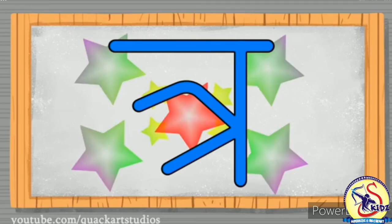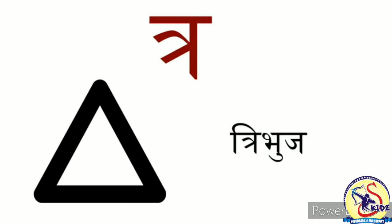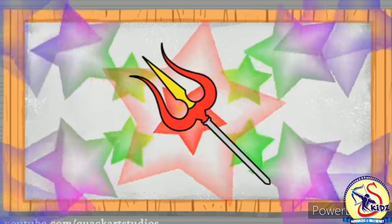त्र — त्र से त्रिभुज, तीन कोण वाला। त्रिशूल।